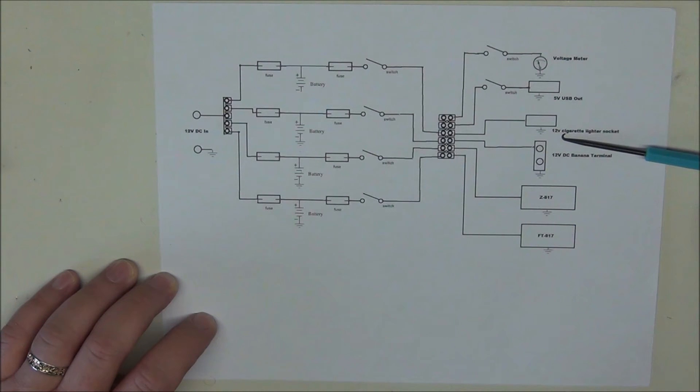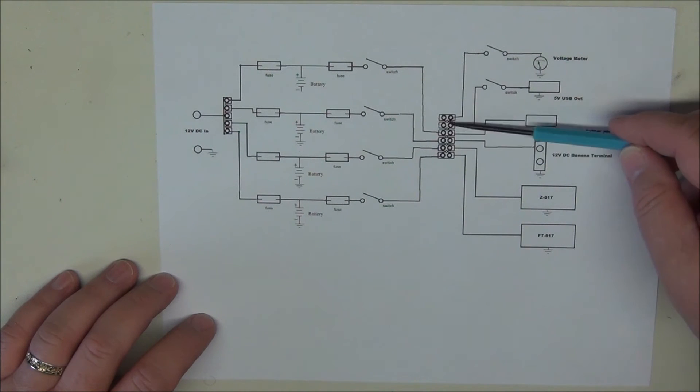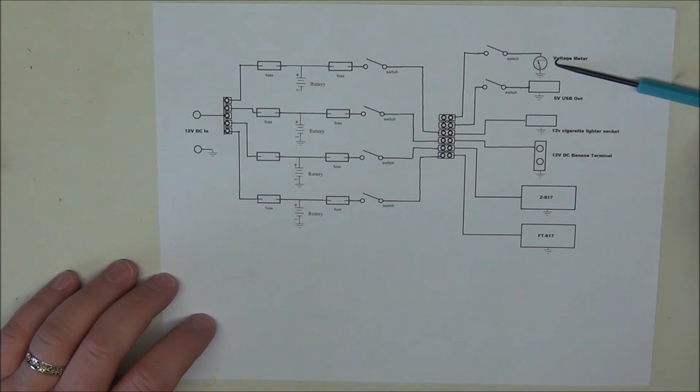I'm also going to have a 5 volt USB output. This would be useful for charging cell phones and possibly charging my tablet. It will be switched because I don't want the 5 volt regulation in here consuming power when I'm not using it. I will also have a voltmeter so that I can monitor the voltage on the battery pack. And it again will be switched. I don't want the meter consuming energy when I'm not needing it.